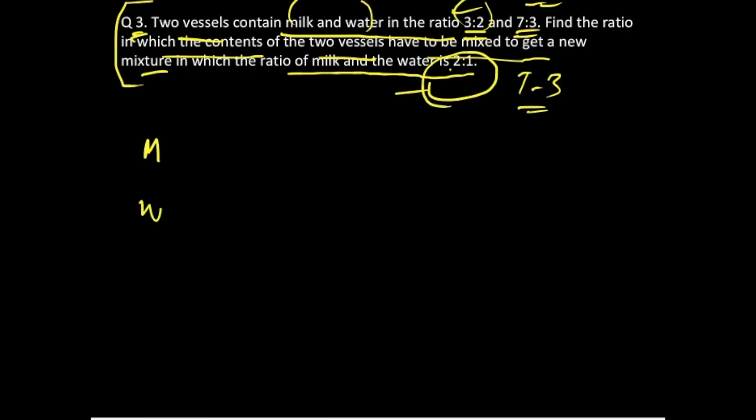Let me write the milk and water in these particular vessels. In vessel 1, this is 3 parts milk and 2 parts water because the ratio is 3:2. The second vessel contains milk in 7 parts and water in 3 parts.